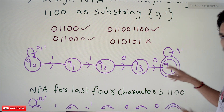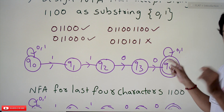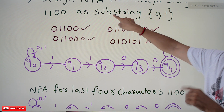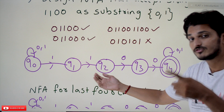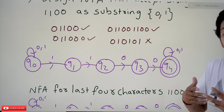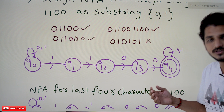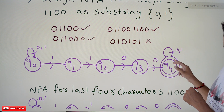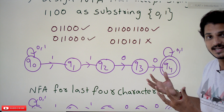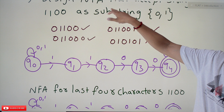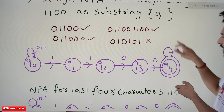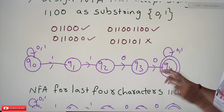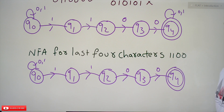After reaching the final state q4, if you take zero or one you stay on q4. Why? Because this is a substring problem — once any machine reaches q4, the condition is already satisfied. After that, whatever input comes, we stay on the final state because we already found what we need. That is why after reaching q4 we stay there on any further input symbols.